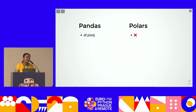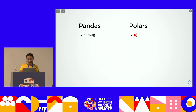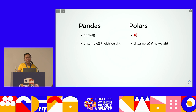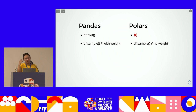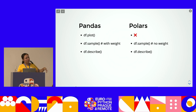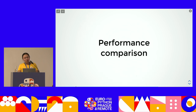Another difference: pandas supports plotting quite easily — you can call `df.plot()` and get a matplotlib chart. Polars doesn't have that yet; I don't know if they have plans to implement it. Also, `df.sample()` exists in both, but in pandas you can pass a weight parameter, while in Polars you can't do that yet. `describe()` is the same in both.